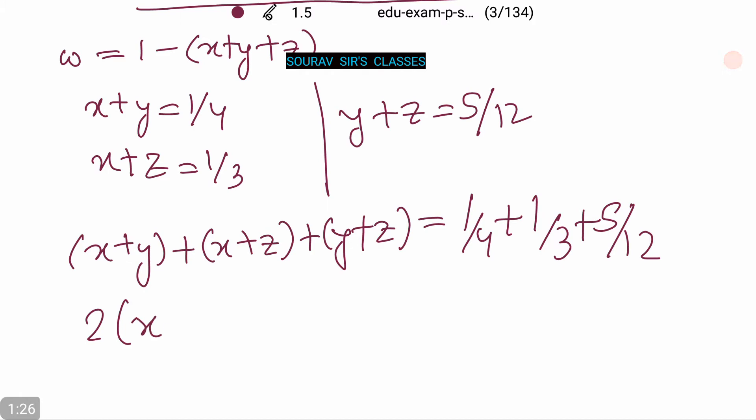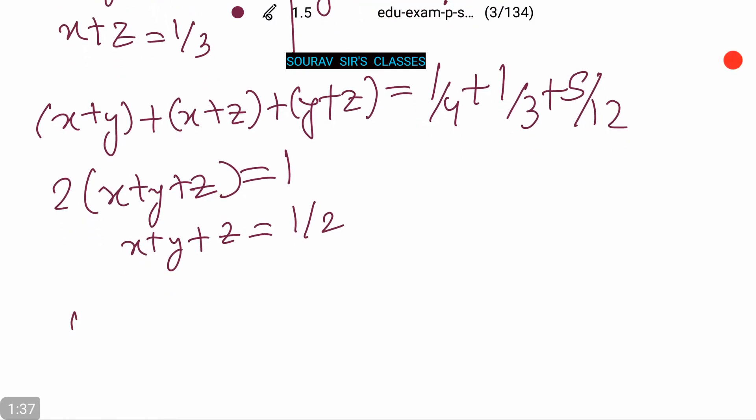Therefore, 2 times X plus Y plus Z equals 1, or X plus Y plus Z equals 1/2. Now we need W equals 1 minus X plus Y plus Z, and by putting in the values, the answer is 1/2.